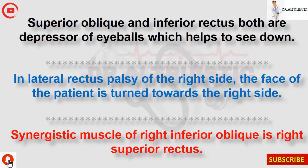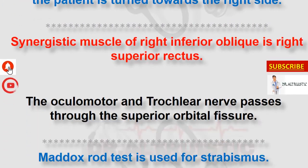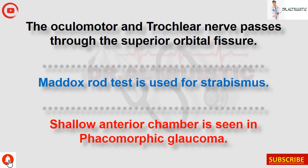Superior oblique and inferior rectus are both depressors of the eyeball, helping to see downward. In lateral rectus palsy of the right side, the face of the patient is turned towards the right side. The synergistic muscle of the right inferior oblique is the right superior rectus. The oculomotor and trochlear nerves pass through the superior orbital fissure. Maddox rod test is used for strabismus.